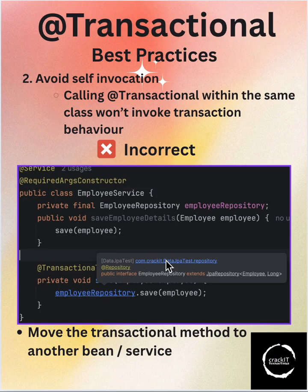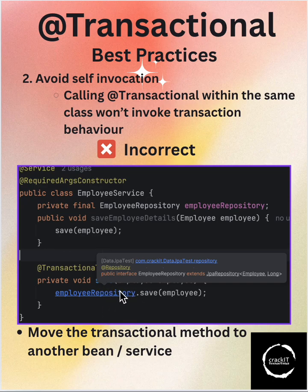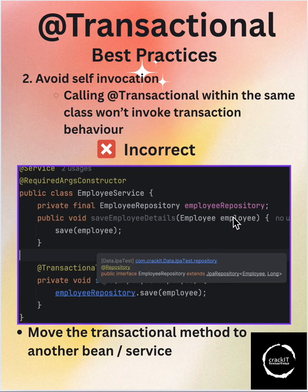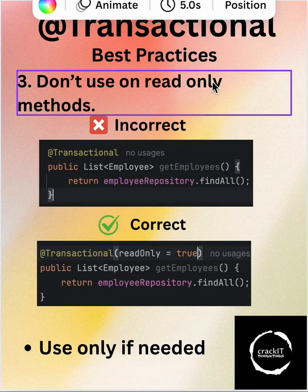Next, avoid self-invocation. We should not call a @Transactional method within the same class. For example, if you call the saveEmployee method from within the same class and that method has the @Transactional annotation, the transaction behavior will not be invoked. We should move that method to another bean or service.